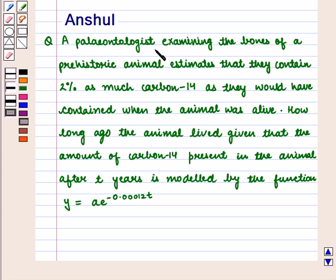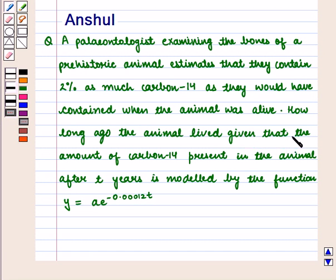A paleontologist examining the bones of a prehistoric animal estimates that they contain 2% as much carbon-14 as they would have contained when the animal was alive. How long ago did the animal live? Given that the amount of carbon-14 present in the animal after t years is modelled by the function y = a · e^(−0.00012t).